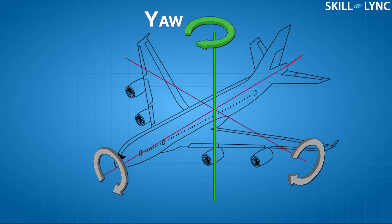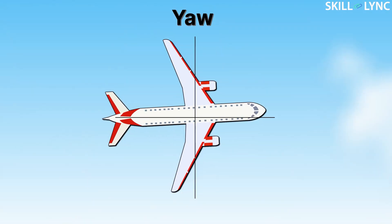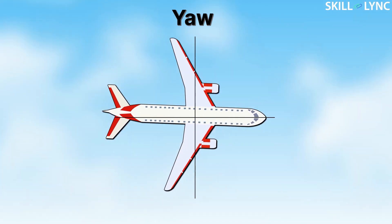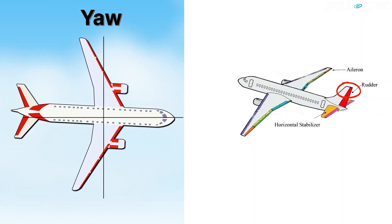The last axis is called the yaw. This axis lies along the center of gravity of the aircraft and is perpendicular to both the fuselage and the wings. The motion of the aircraft about this axis is called a yaw moment, and it is controlled by the rudder or vertical stabilizer of the aircraft.